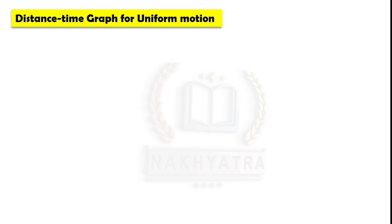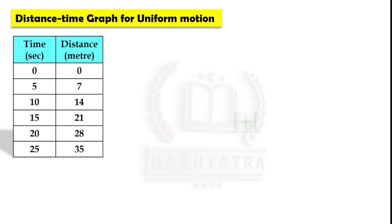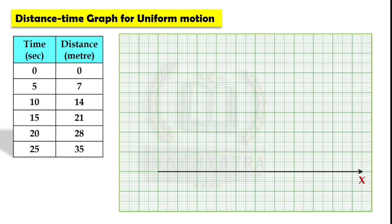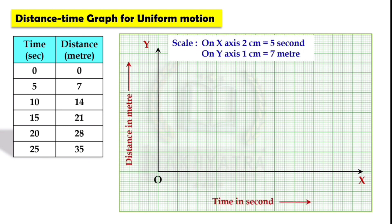Next we will see the distance-time graph for uniform motion. Here we take the scale on the x-axis as 2 cm equal to 5 seconds, and on the y-axis 1 cm equal to 7 meters. Note that the abscissa is the horizontal axis and the ordinate is the vertical y-axis of a two-dimensional standard graph.